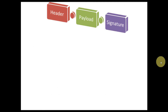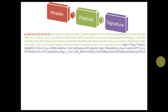This slide explains the structure of the JWT token. It has three parts: header, payload, and signature. All three parts are encoded separately in base64 format, concatenated with a dot symbol, and sent over the wire. On the receiver side, each part is decoded separately and then used.